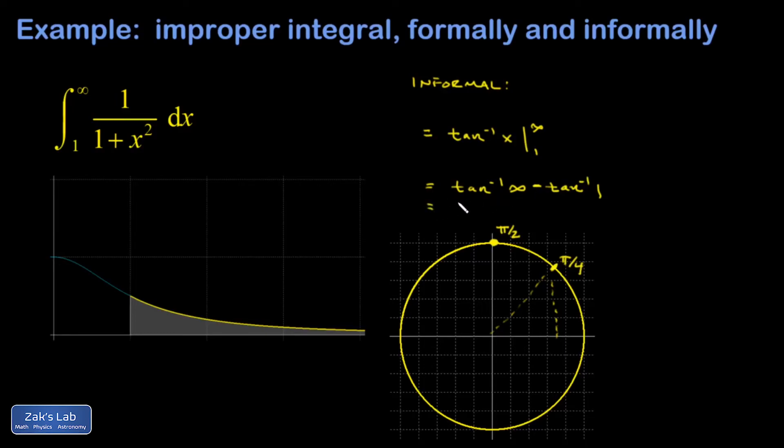So my integral becomes the angle whose tangent is infinity—that's π/2—minus the angle whose tangent is 1—that's π/4. When I subtract them I get π/4. So it turns out the area under this curve is finite and has a value of π/4.